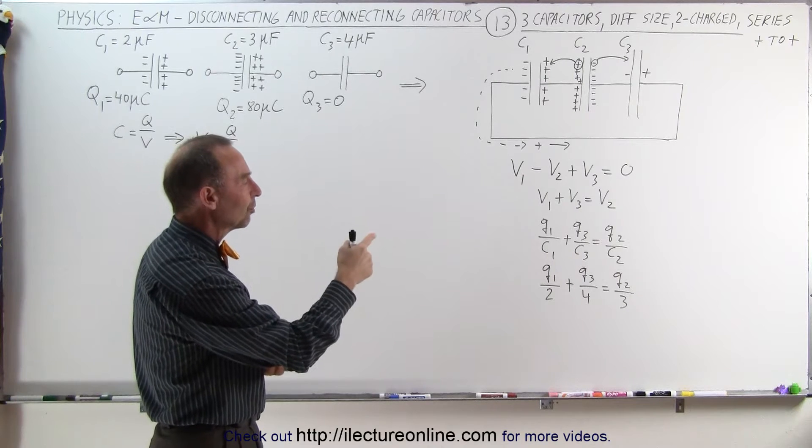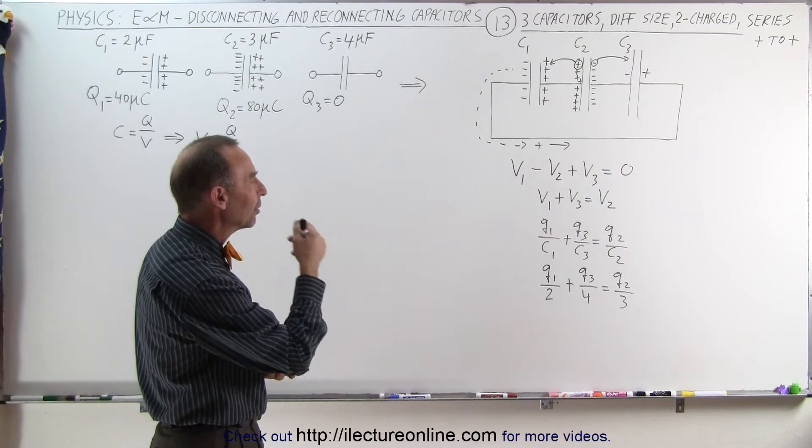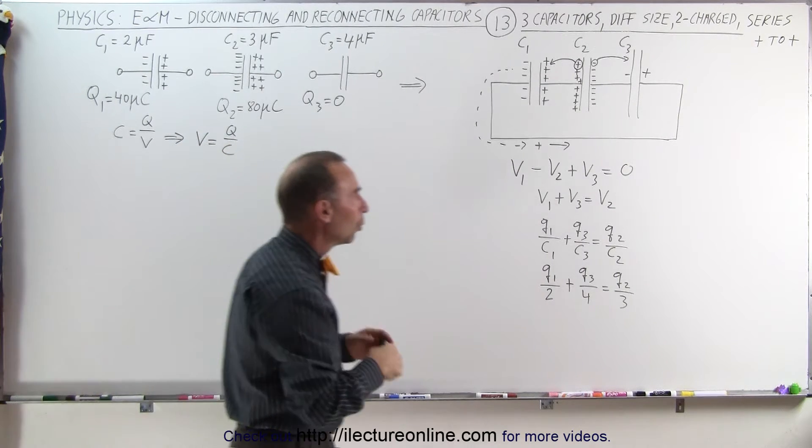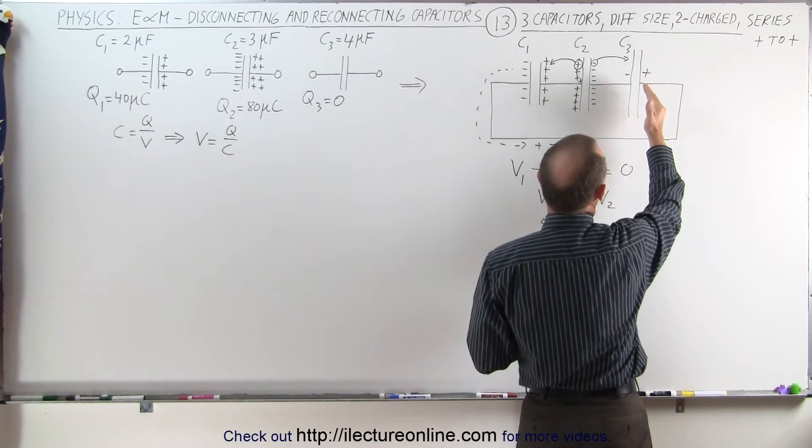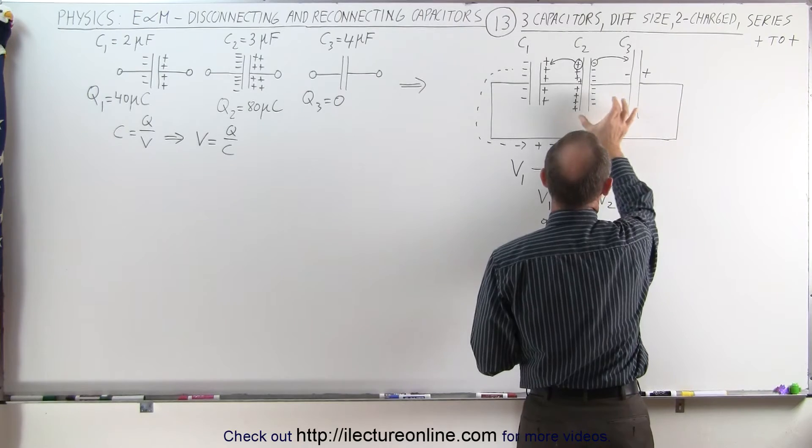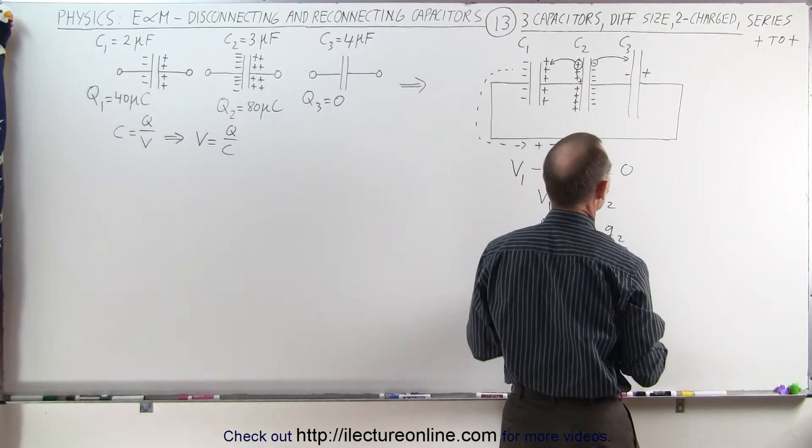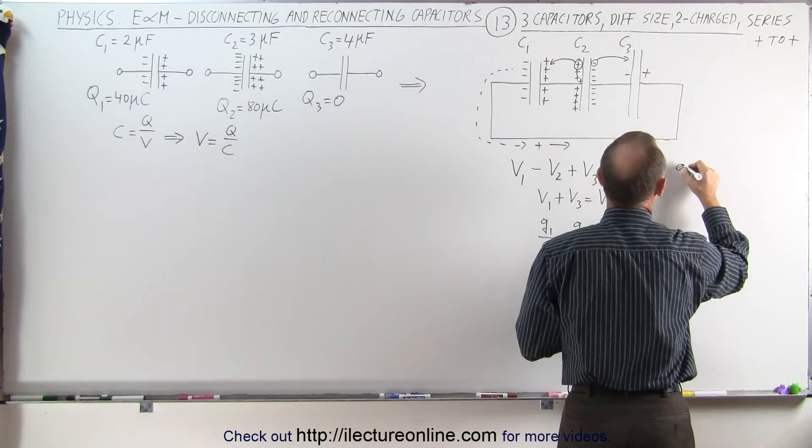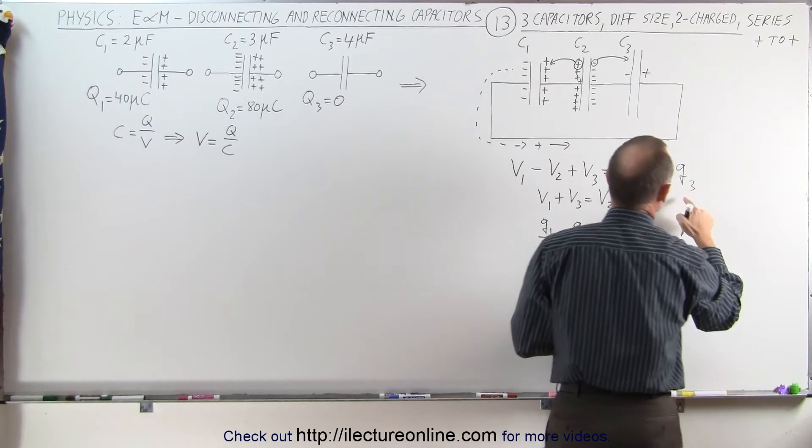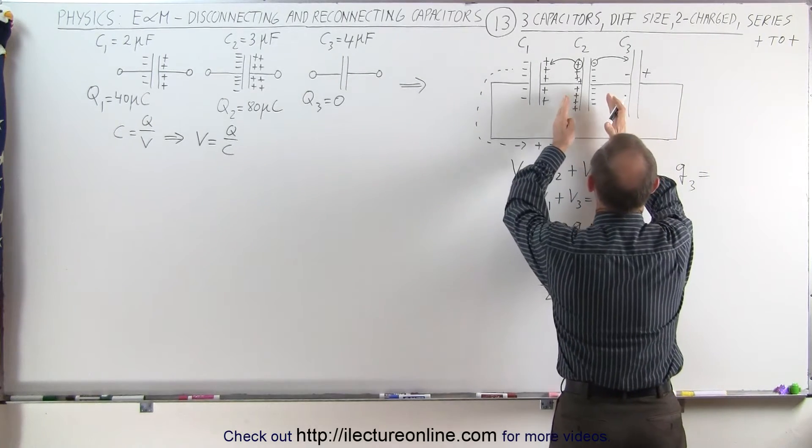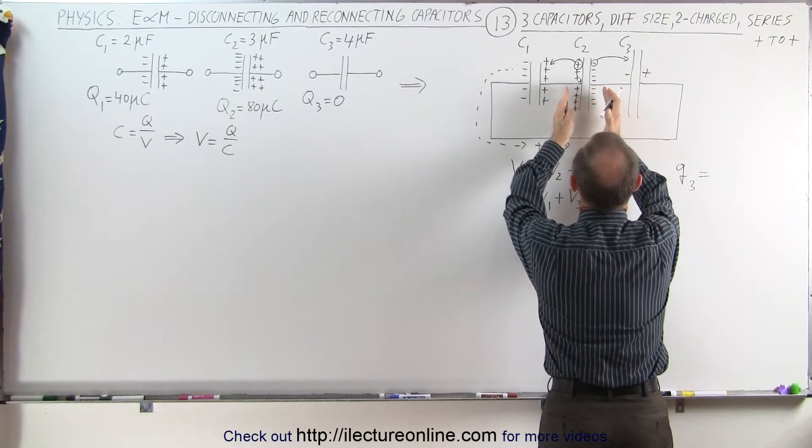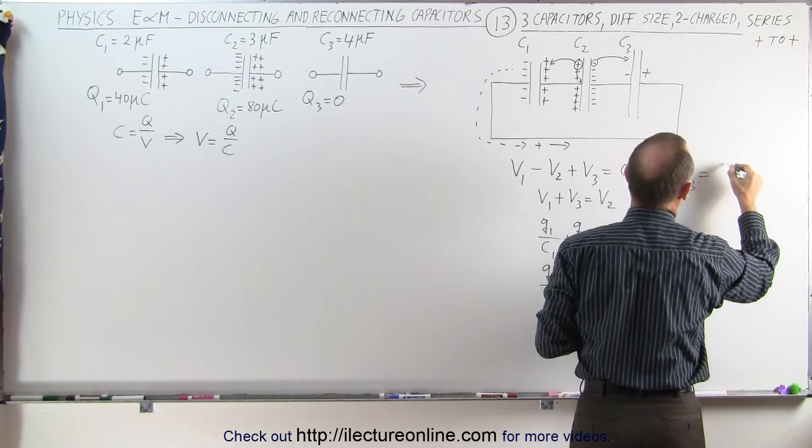Now we need some relationships between Q1, Q2, and Q3. What we can say is that the charge on the third capacitor will equal the charge that leaves the second capacitor. Therefore, we can say that Q3, the final charge on the third capacitor, is going to be equal to the difference between the charge that started in this capacitor and the charge that we ended up with. In other words, big Q2 minus small Q2.